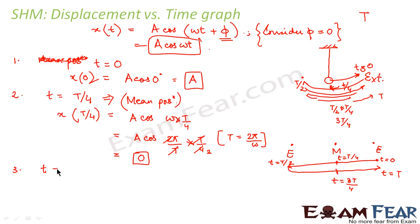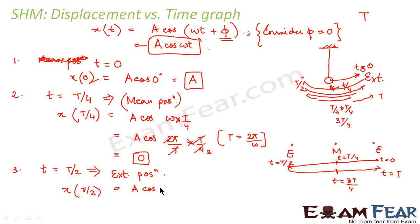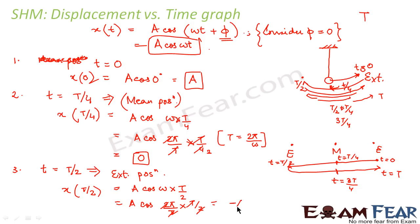Now let us calculate the same at t = T/2. At t = T/2, the object is again at the extreme position. So x(T/2) = A cos(ω · T/2) = A cos(2π/T · T/2) = A cos(π). cos(π) = −1, so this comes out to be −A.